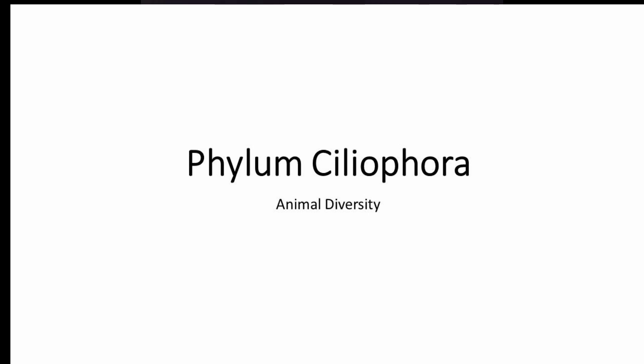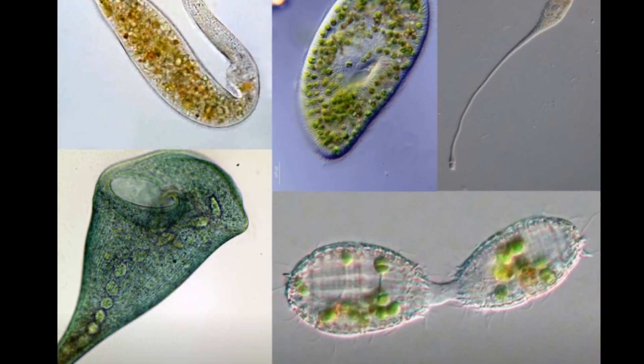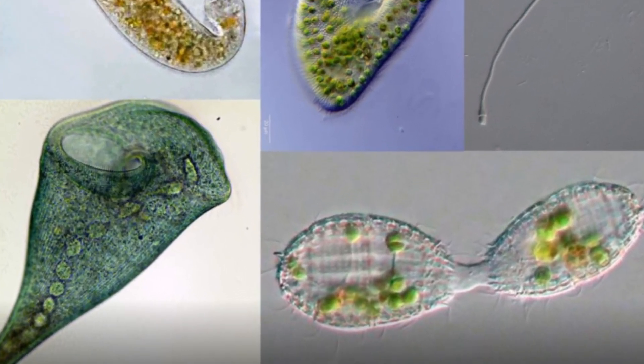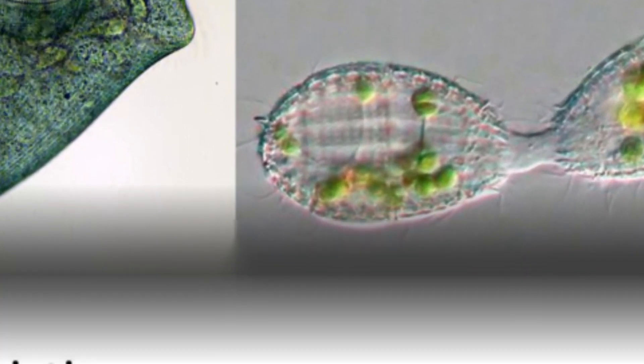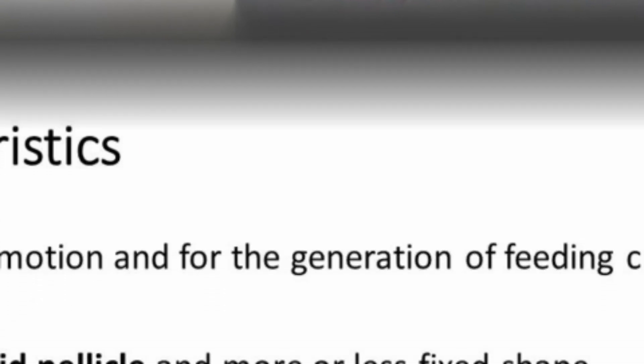Dear students, Phylum Ciliophora belongs to protozoans. Protozoans are animal-like protists, as previously we have discussed. It consists of seven phyla: Sarcomastigophora, Myxozoa, Apicomplexa, Ciliophora, Labyrinthomorpha, and Microspora.